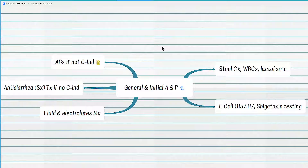Beyond initial management and assessment of contraindications, the two major decision point questions for treatment of acute diarrhea are: one, to figure out if we are dealing with inflammatory or non-inflammatory diarrhea; and two, if there is indication or contraindication for antidiarrheals and antibiotics.